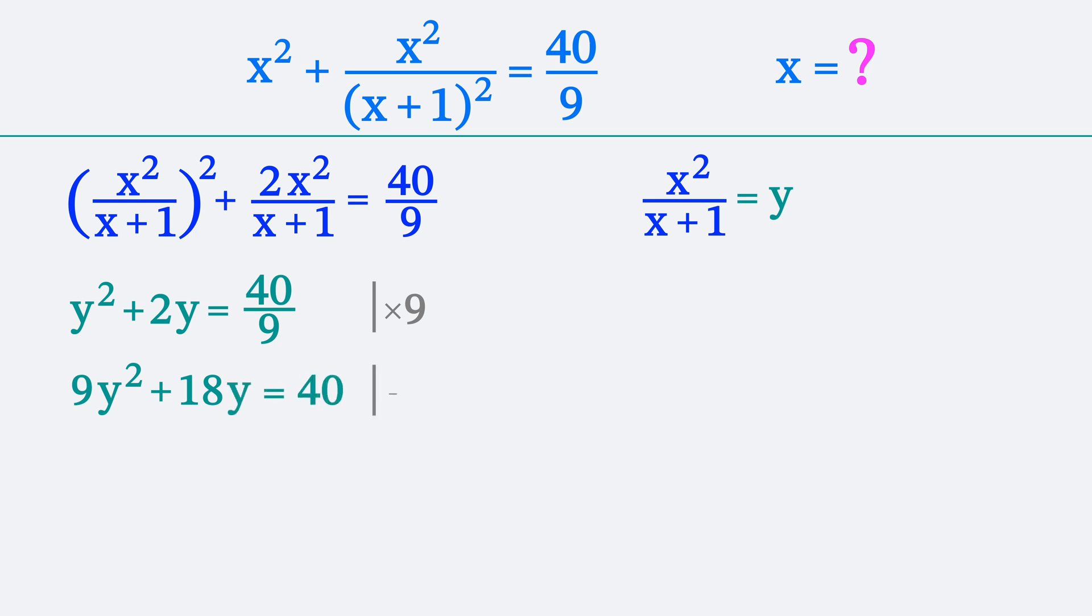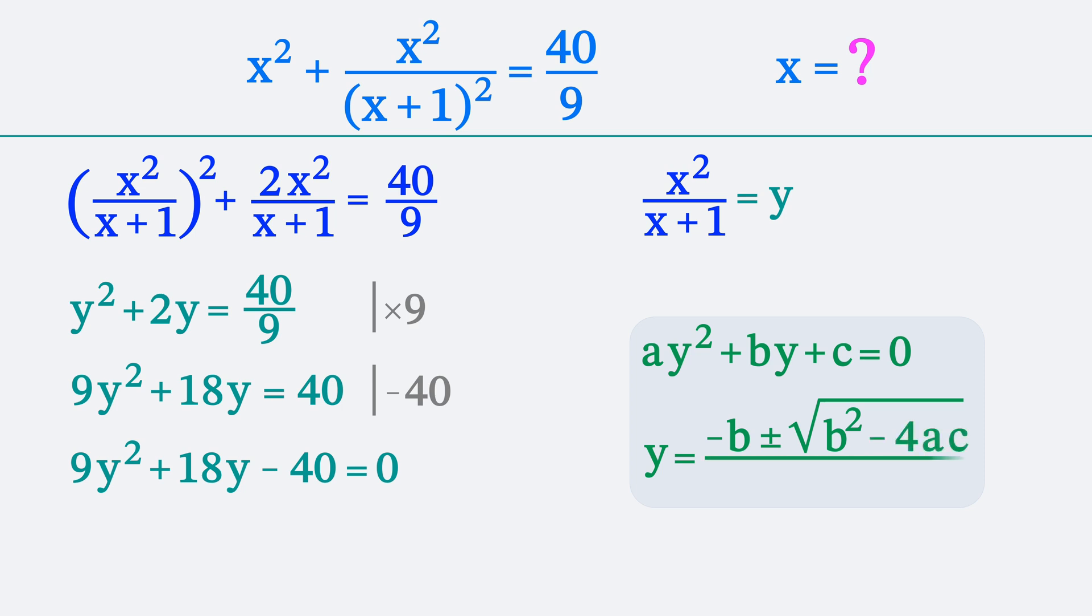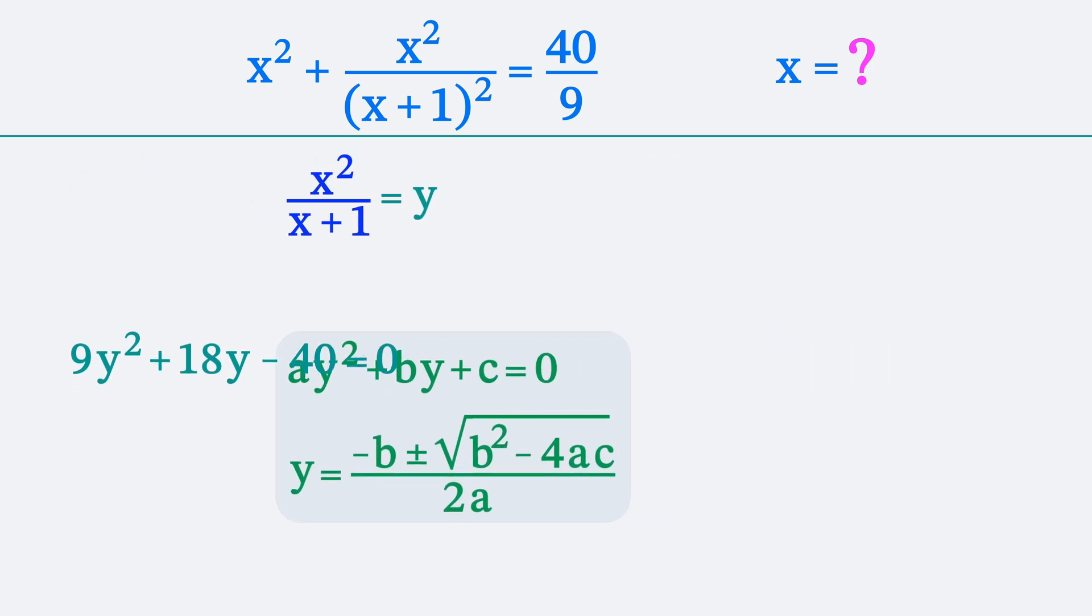Then, let's subtract 40 from both sides of the equation. We get 9y squared plus 18y minus 40 equals 0. This is a standard quadratic equation, which can be solved using the discriminant formula. Let's recall the formula for the roots of a quadratic equation through the discriminant. Let's apply it to our equation.